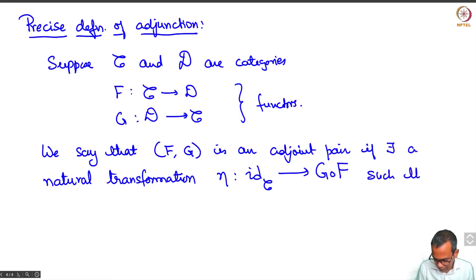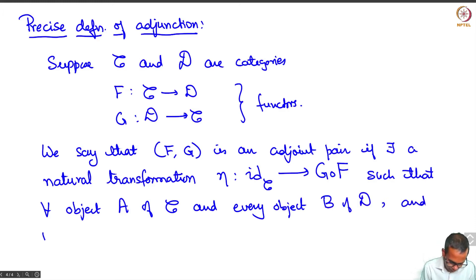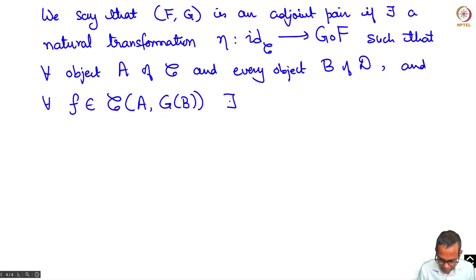Such that for every object A of C and every object B of D, and for every arrow f in the category C from A to G of B, we have there exists a unique arrow f sharp in the category D from F of A to B such that the diagram commutes.